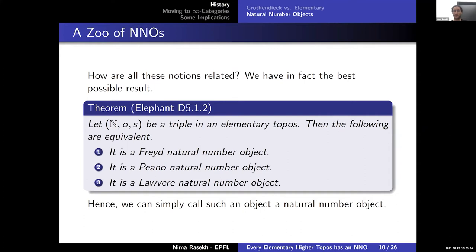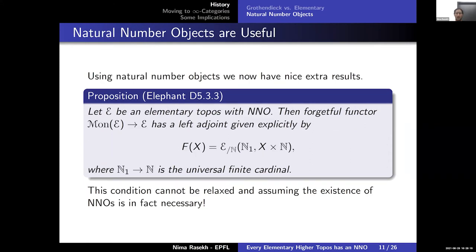As soon as we have a natural number object in our elementary topos, we can prove new results. For example, we get free monoids, with the free monoid given explicitly by a formula involving n₁ — the universal finite cardinal — constructed as a product using the natural number object. This existence is both necessary and sufficient: in the category of finite sets, the free monoid on a point doesn't exist because it would need to be ℕ itself, which is not finite. So the natural number object is necessary to get such results.